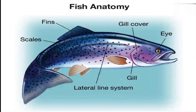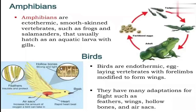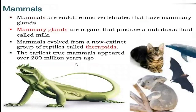Fish anatomy includes eyes, gills, gill cover (operculum), lateral line system, scales, and fins — pectoral fins, caudal fins, dorsal fins. Amphibians have smooth skin and are vertebrates — frogs and salamanders. They hatch at a larval stage with indirect development. Birds have an endoskeleton, maintain body temperature, and are oviparous. Wings are modified forelimbs adapted with feathers, hollow bones, and air sacs. Mammals are endothermic vertebrates with mammary glands that produce milk. Early mammals evolved from a now-extinct group of reptiles called therapsids.